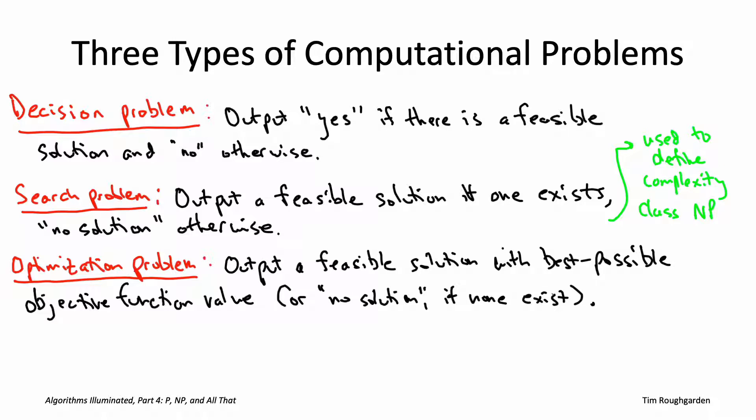Now you might be concerned that in restricting our definition of the complexity class NP only to search problems, we're leaving optimization problems like the traveling salesman problem out in the cold. Obviously those are problems that we care about quite a bit, but not to worry.